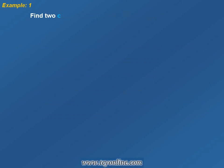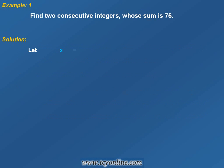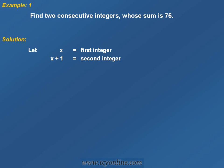Let us look at an example. We need to find two consecutive integers whose sum is equal to 75. Let us suppose that the first integer is x. Since the integers are consecutive, the next integer would be x plus 1. According to the question, the sum of these two integers should be equal to 75. That means x plus x plus 1 is equal to 75, or we can say that 2x plus 1 is equal to 75.